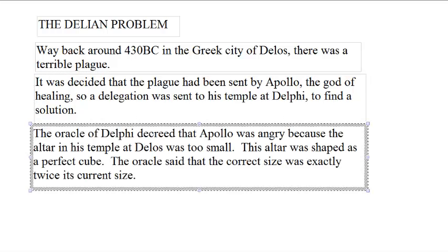The Oracle of Delphi decreed that Apollo was angry because the altar in his temple at Delos was too small. This cubic altar, the altar for some reason was exactly a cube. The Oracle said that it was too small, it should be twice as big.